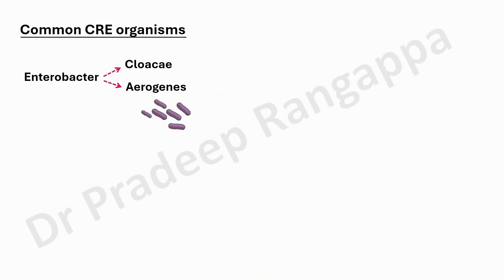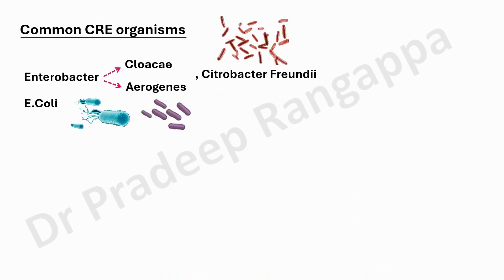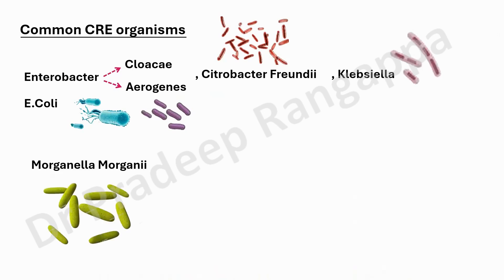We have limited choices with non-carbapenem antibiotics. Enterobacter species is one of them — I'll put the picture of these organisms so they're entrenched in your mind. Enterobacter cloacae and Enterobacter aerogenes are common, and one of the most common organisms we see day in and day out in the ICU is E. coli. Citrobacter freundii is also seen, and the second most common after E. coli is Klebsiella.